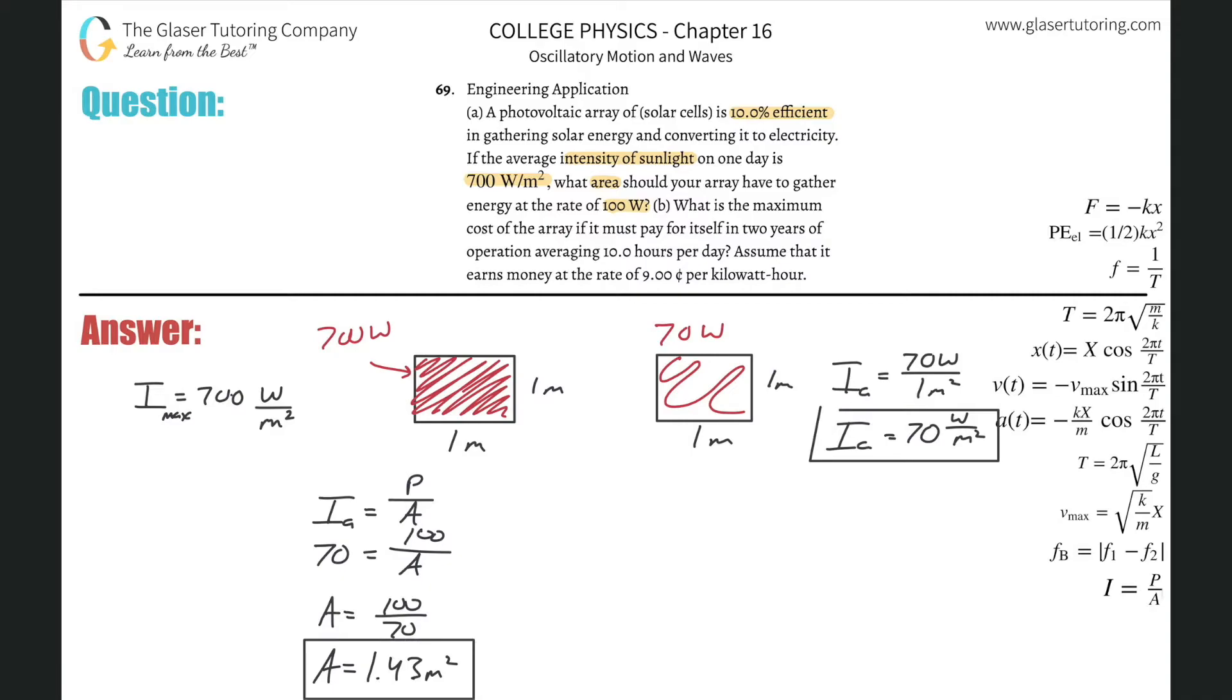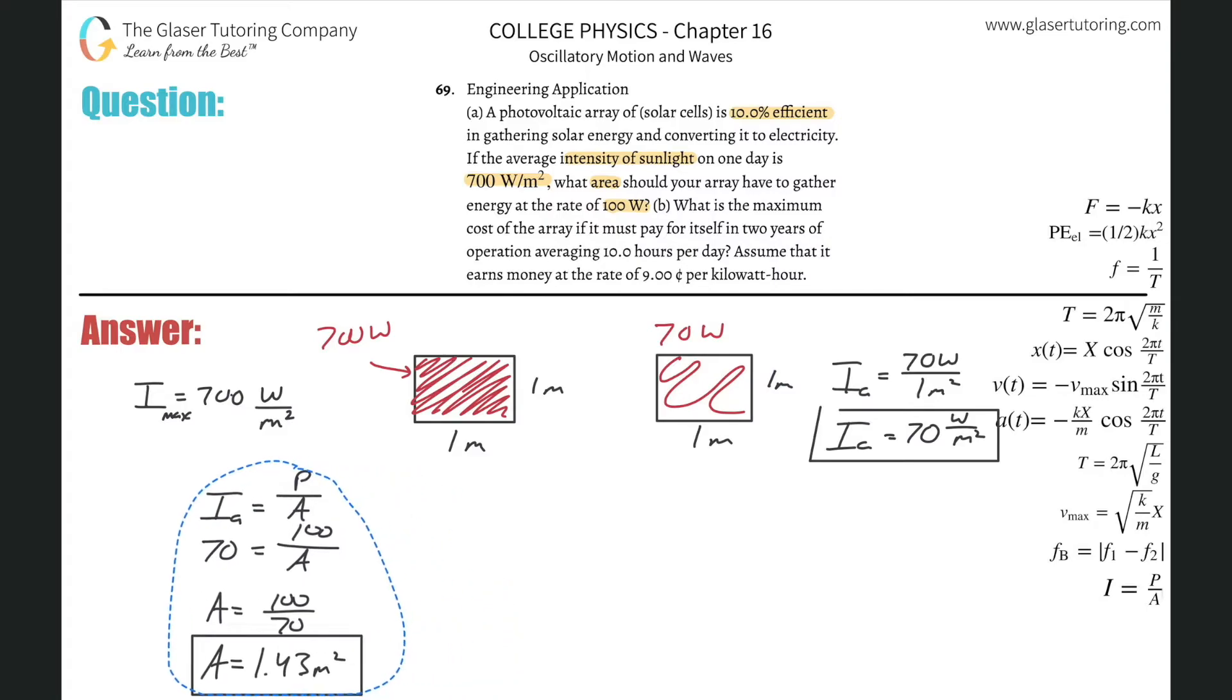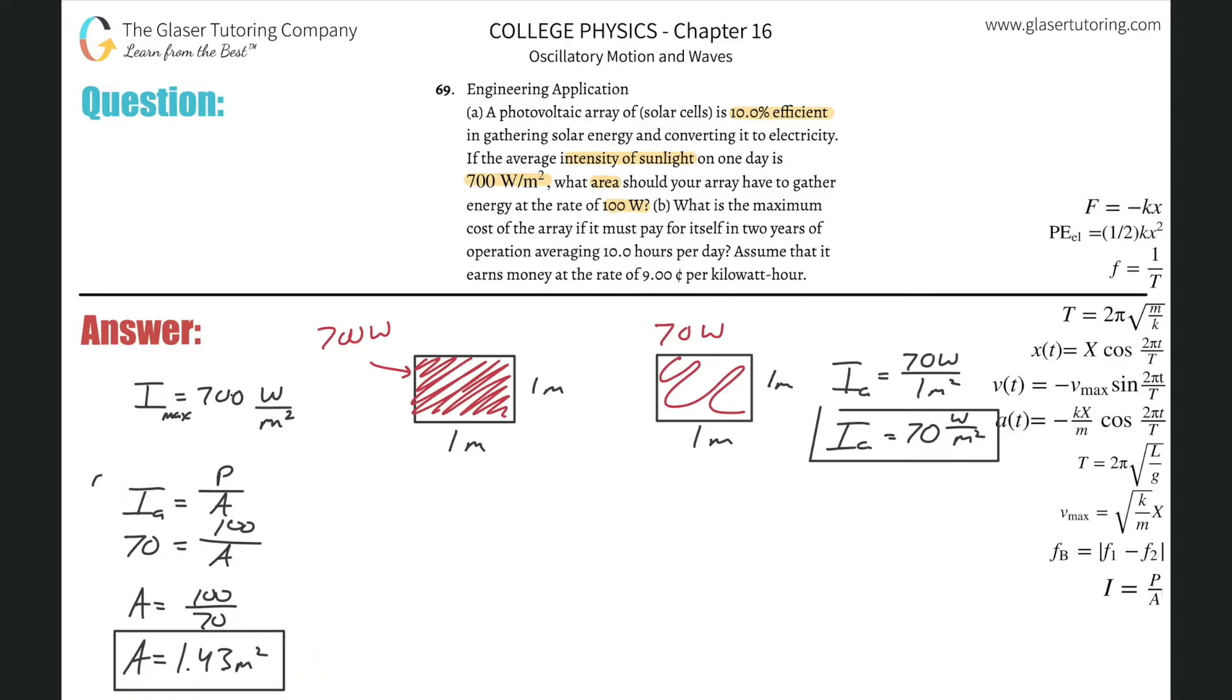So essentially this just becomes a division. It's 100 divided by 70. So the area simply becomes 10 over 7 or 100 over 70. So 1.43 or so, 1.43 meters squared. So even though the sunlight is being supplied at this particular intensity, we would need to only to even absorb 100 watts of power, we would need a bigger square anyway. So that takes care of that. That's letter A.